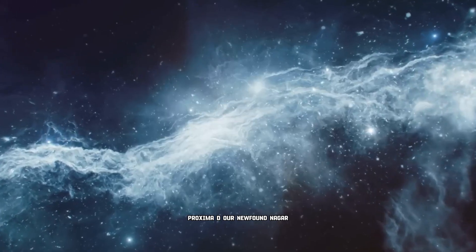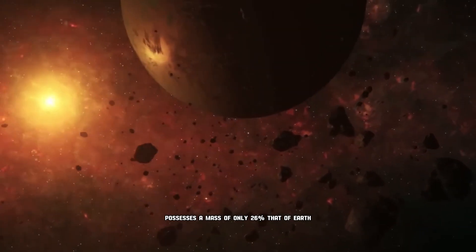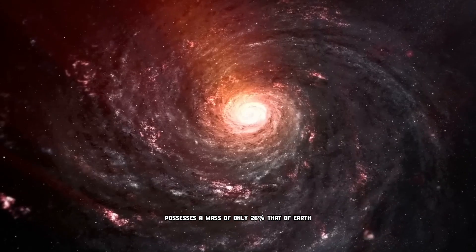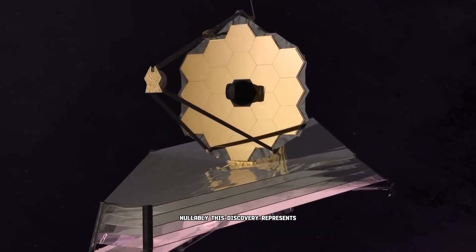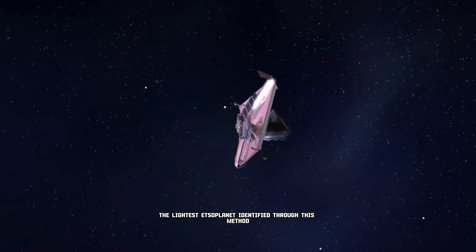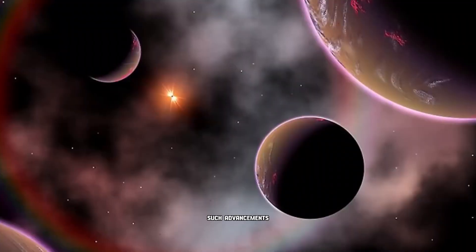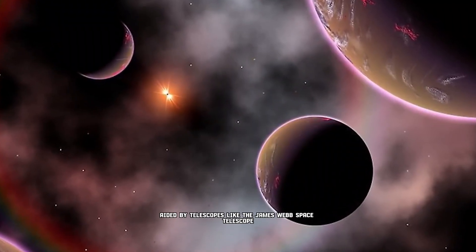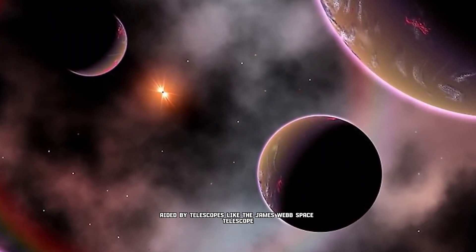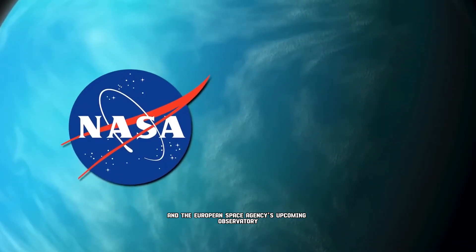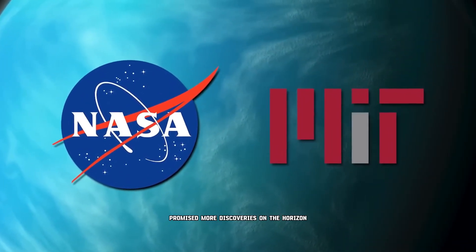Proxima D, our newfound neighbor, possesses a mass of only 26% that of Earth. Notably, this discovery represents the lightest exoplanet identified through this method. Such advancements, aided by telescopes like the James Webb Space Telescope and the European Space Agency's upcoming observatory, promised more discoveries on the horizon.